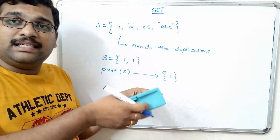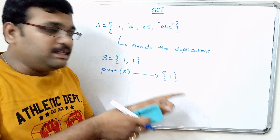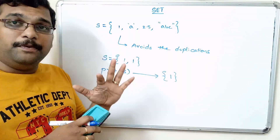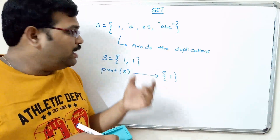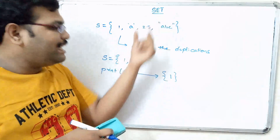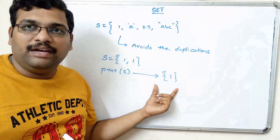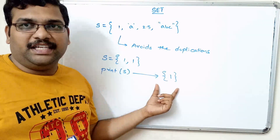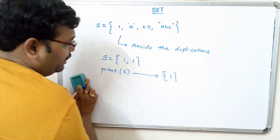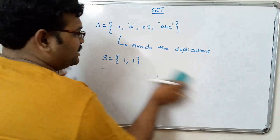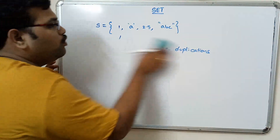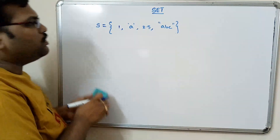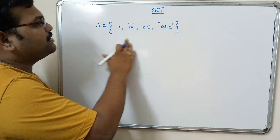That is the major difference between list, tuples, and set. In lists and tuples, duplications are allowed, whereas in a set, duplications are not allowed — it will not consider duplicates.